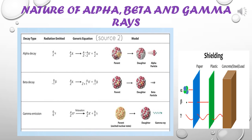In the second diagram, I have shown that an alpha particle cannot penetrate paper, plastic, concrete, or steel. But a beta particle can penetrate paper but not plastic or anything denser. A gamma particle, however, being a ray, can penetrate paper, plastic, concrete, steel — anything.